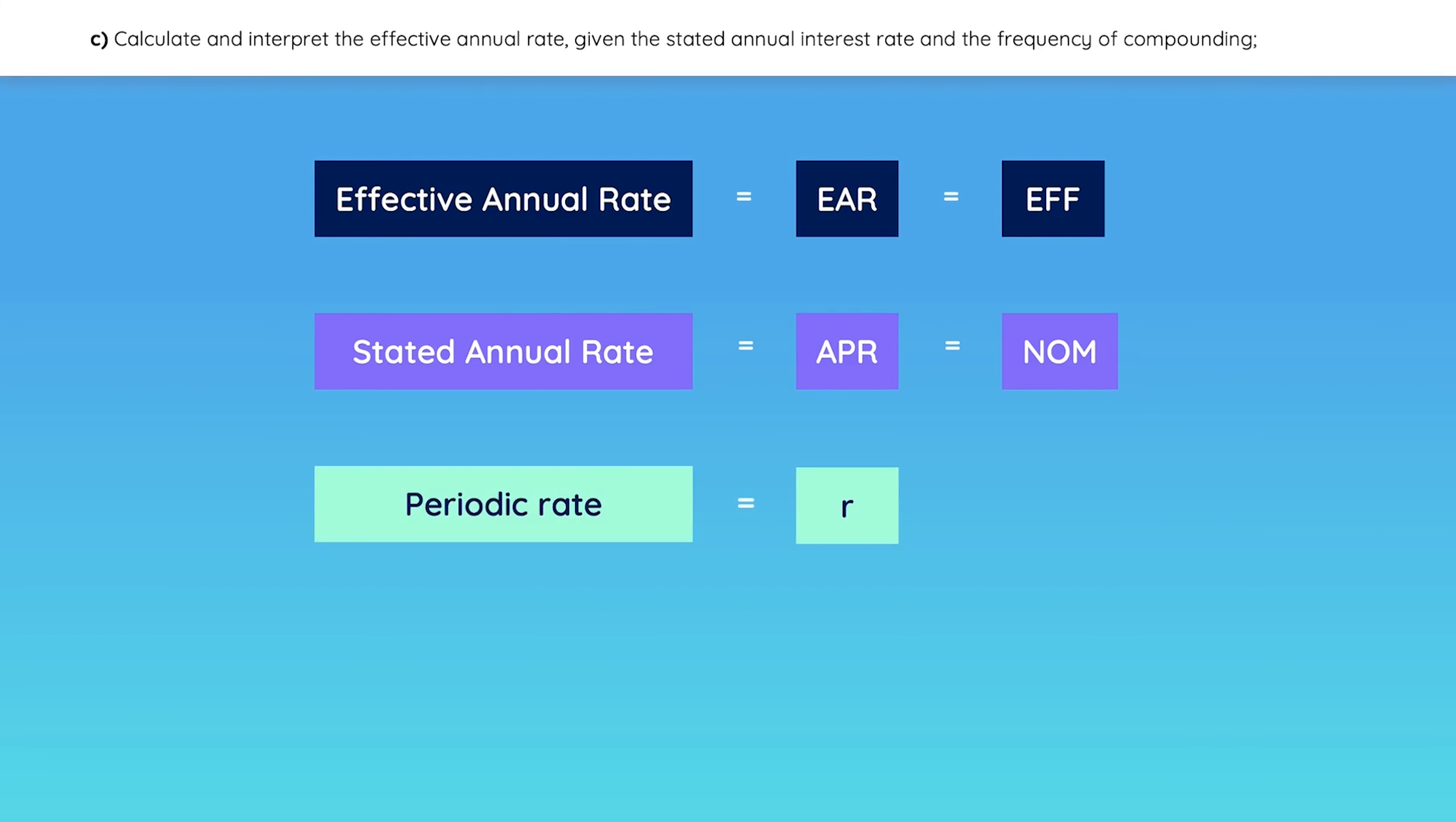The relationship between the effective annual rate, the stated annual rate, and the periodic rate is given by these formulas. Pause the video if you need to, but it will be much easier to remember with an example.